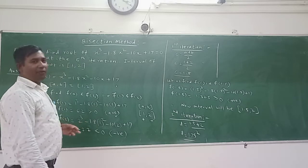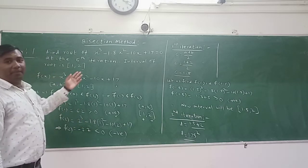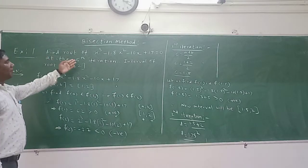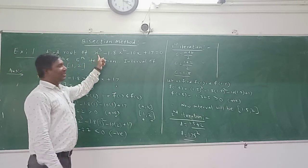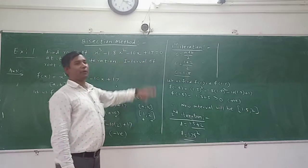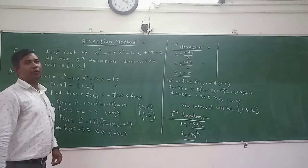Hello everyone, now we will discuss the problem based on the bisection method. The problem is there is an equation x cubed minus 1.8 x squared minus 10 x plus 17 equals 0 and we want to find the root of that equation.